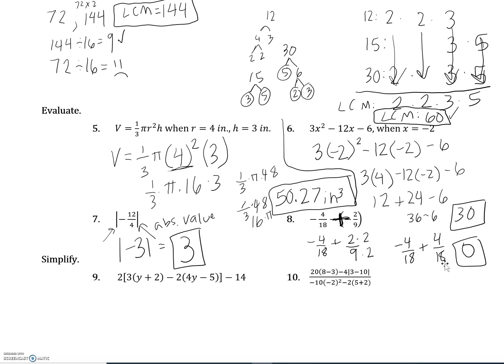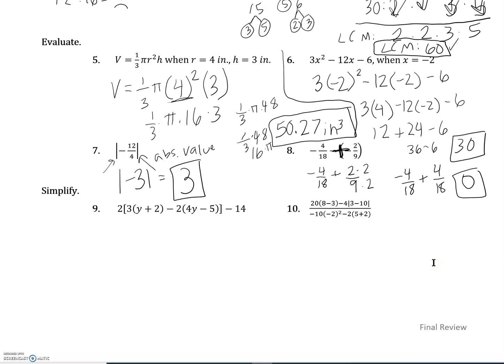So number nine and 10 are again using that order of operations. We want to try to simplify these expressions. Number nine, we have the two out front, but we're going to save that for last and we simplify everything inside those square brackets first. So I'll distribute this three, it's something we learned in chapter one. All right, so I'll distribute this three first. I'm leaving that two out front, and I'll have 3y plus 6 as I distribute that 3. Minus, now I can distribute the negative 2 as well, minus 8y plus 10 minus 14 over here.